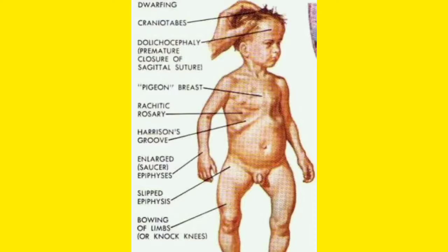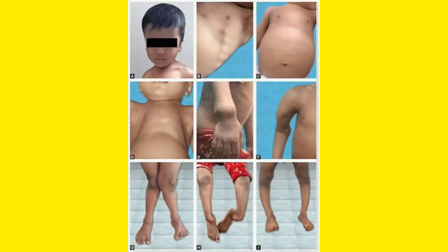Enlarged saucer-shaped joints can be found at the wrist — the epiphysis becomes saucer-shaped. This is very important because these are the portions where the long bones end, so they become enlarged. Slipped epiphysis can also be found. Finally, bowing of the limbs and knock knees complete the clinical features of rickets.